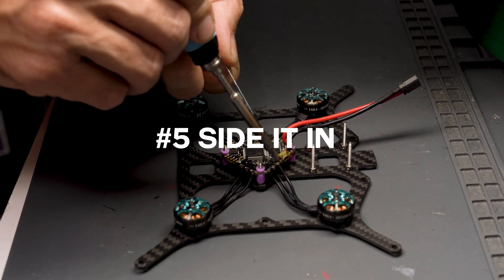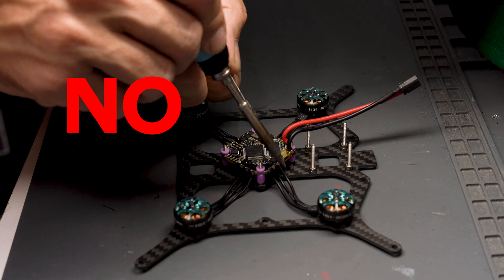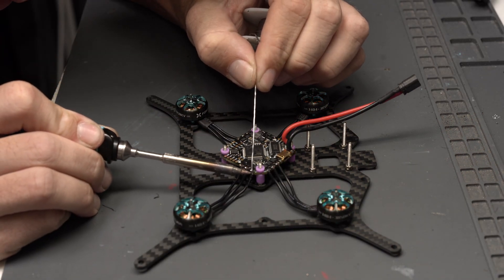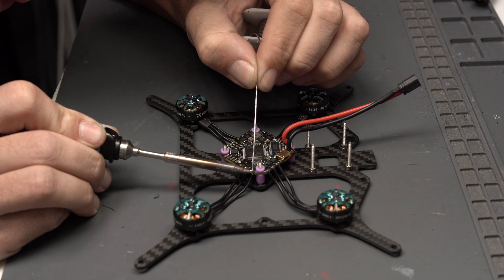Tip number six, don't solder over electronics. You want to solder from the side not over the top. You want to bring your solder over the electronics not the soldering iron itself.